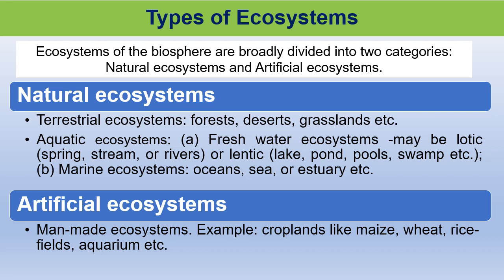Now, artificial ecosystem. Artificial ecosystem is also called man-made ecosystem. These are created and maintained by man. Crop land, aquarium, etc. fall under artificial ecosystem.